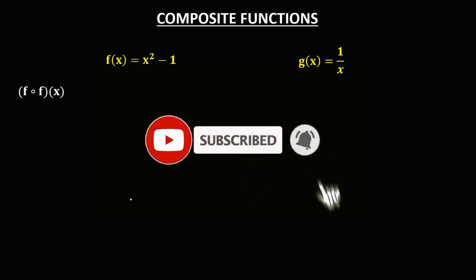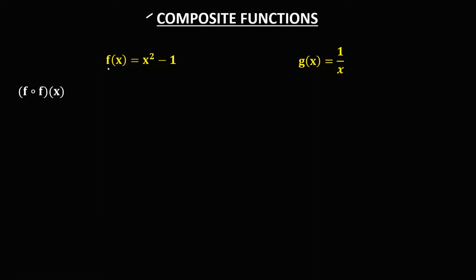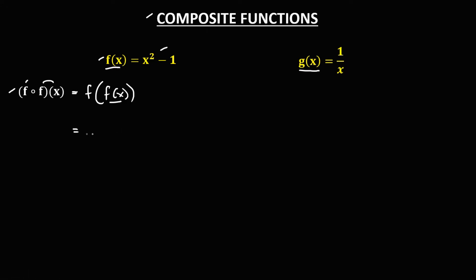Let's have this problem. For a composite function, we have two given functions, f and g. To find the value of this function, we can rewrite it as f of f(x). Since f is equal to x squared minus 1, this becomes f of x squared minus 1.